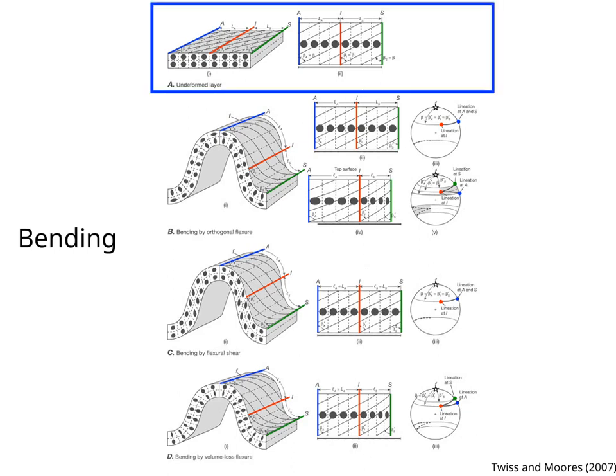Figure A is the undeformed layer. There is no strain in the profile view of the fold, and the angle a lineation makes with the fold axis is beta.